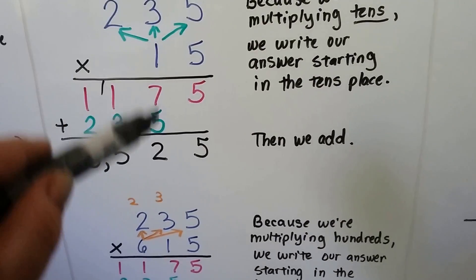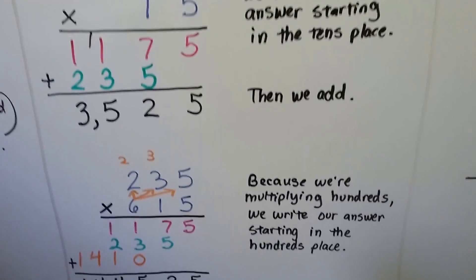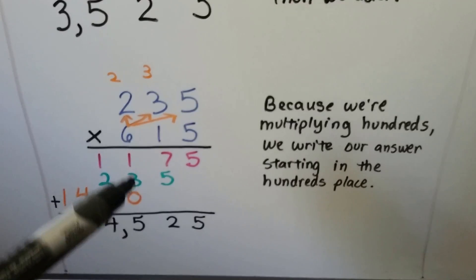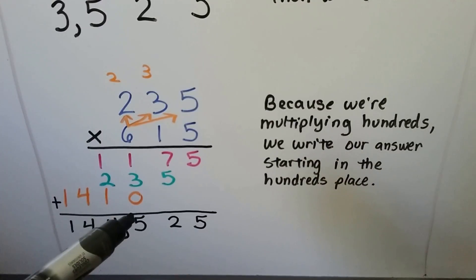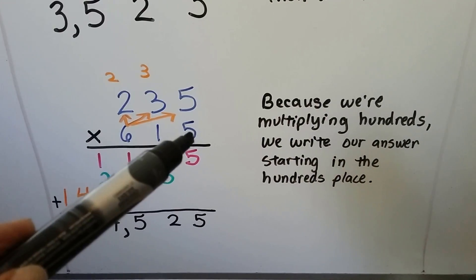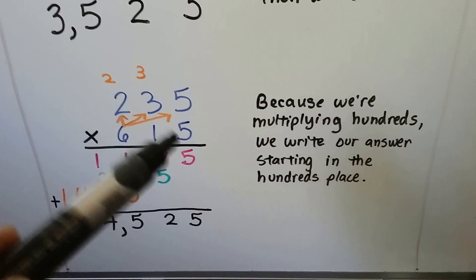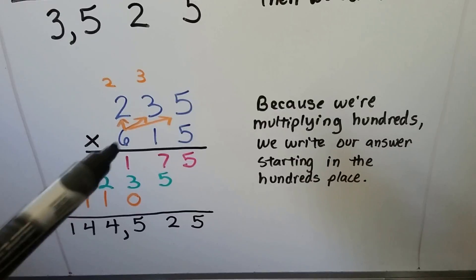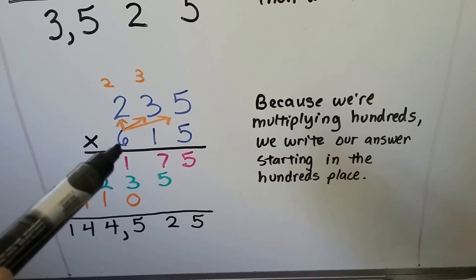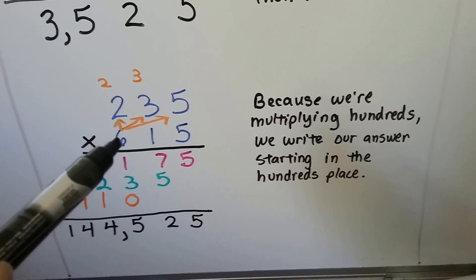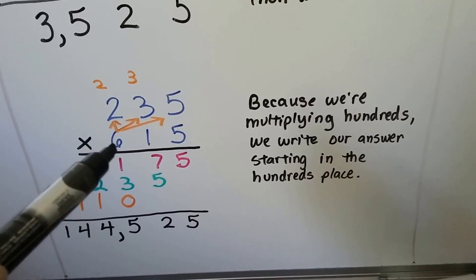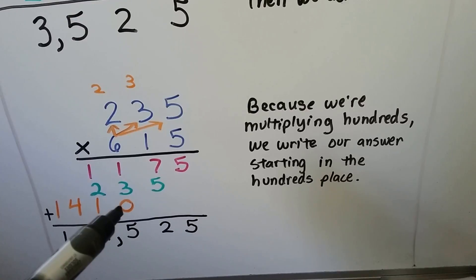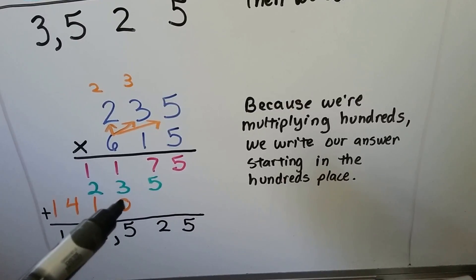Now what happens when we do three digits? We started writing our answer in the tens place because we were multiplying the tens place. Same thing — because we're multiplying the hundreds, we start writing our answer in the hundreds place. When we did the ones we fanned out, when we did the tens place we fanned out, and now multiplying the hundreds place — we fan out starting with the ones. Six times five is thirty, the three goes up and the zero goes in the hundreds place.